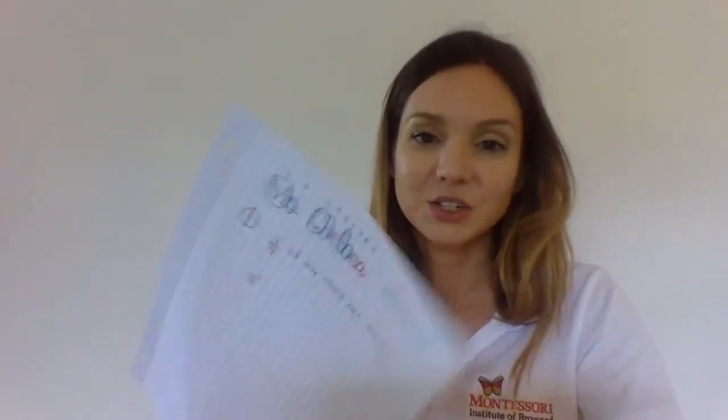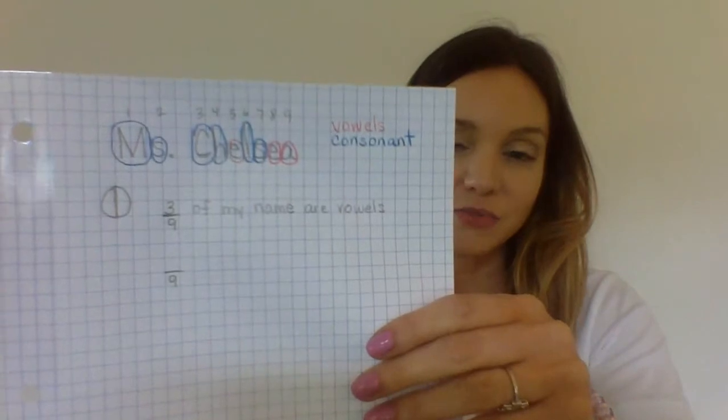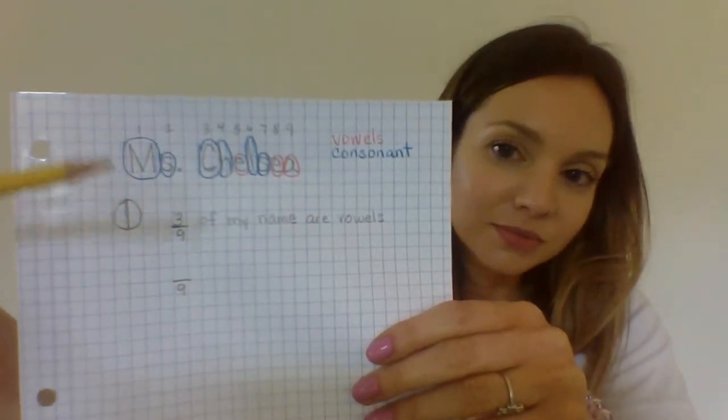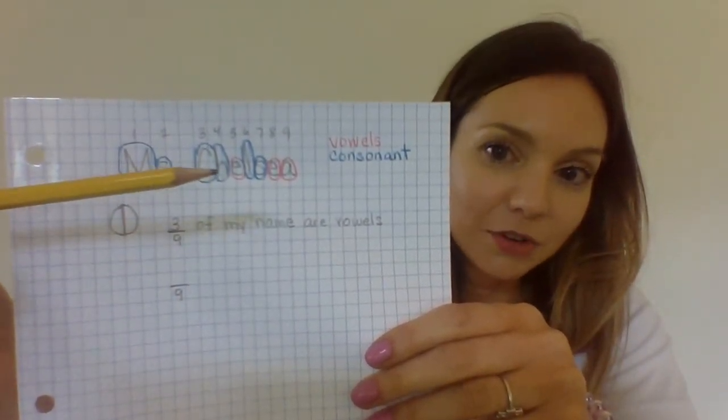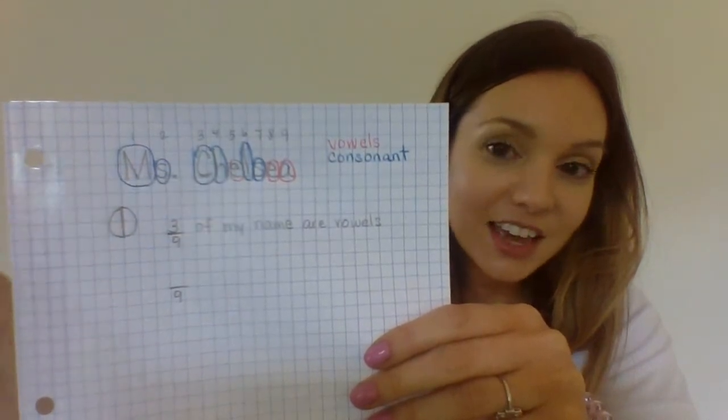Now let's find out how much of my name are consonants. The denominator will stay the same because the number of letters did not change. But this time I'm going to consider the consonants, so my numerator will change: one, two, three, four, five, six. I have six consonants in my name, so six-ninths of my name are consonants.